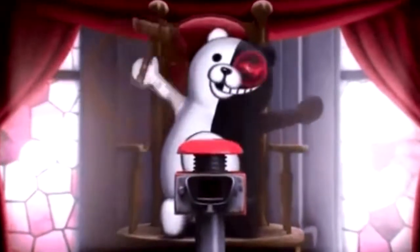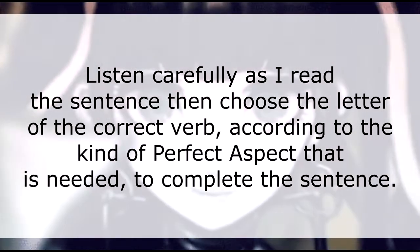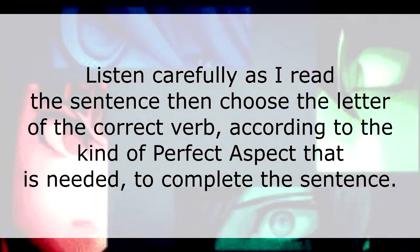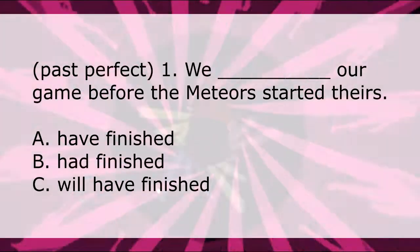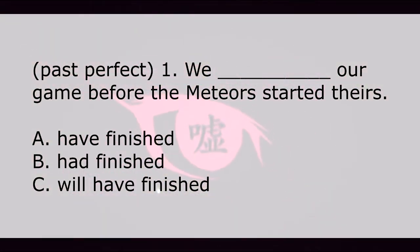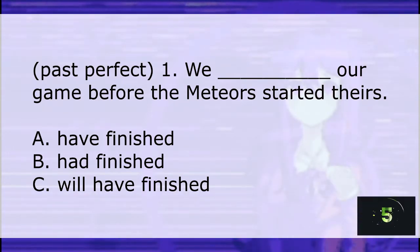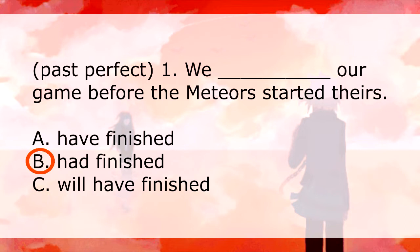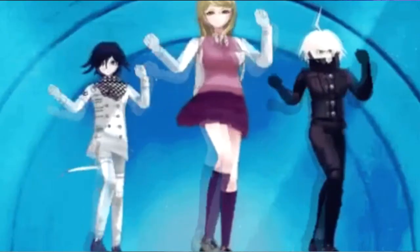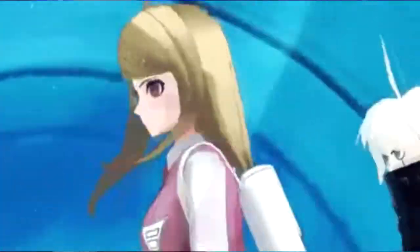Let's have another activity. Listen carefully as I read the sentence, then choose the letter of the correct verb according to the kind of perfect aspect needed to complete the sentence. Question 1: 'We ___ our game before the meteor started theirs.' Which of the following is in the past perfect tense? A) have finished, B) had finished, C) will have finished. If your answer is B, 'had finished,' then you are correct. We had finished our game before the meteor started theirs.